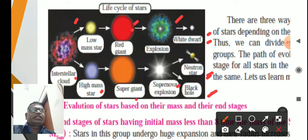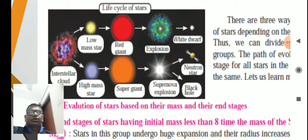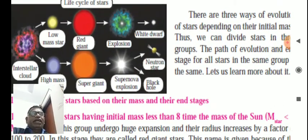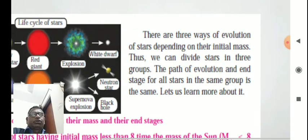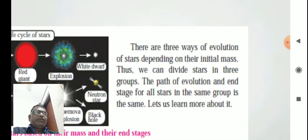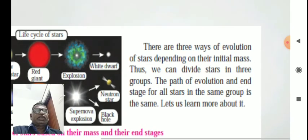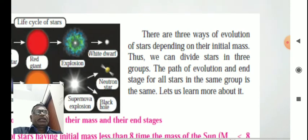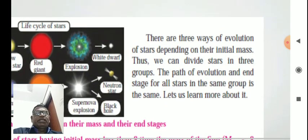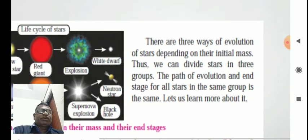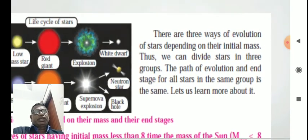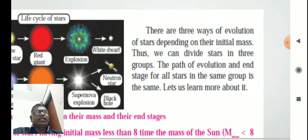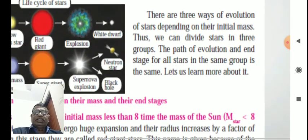There are three ways of evolution of stars depending on their initial mass. Thus, we can divide stars into three groups. The path of evolution and end stage of all stars in the same group is the same.